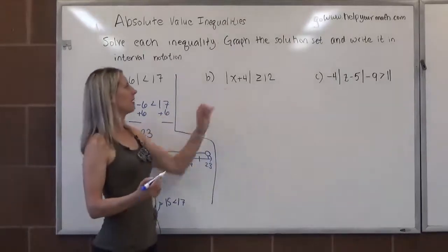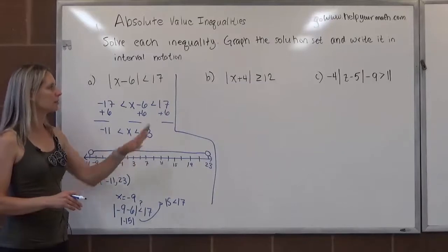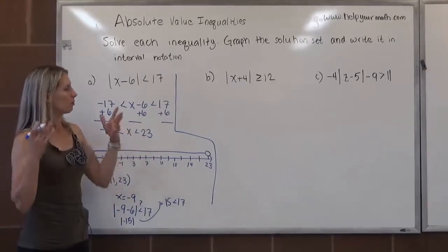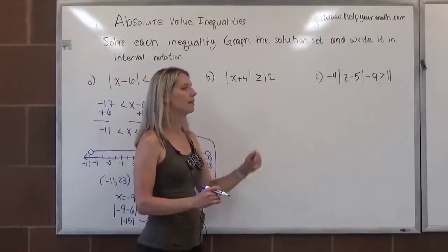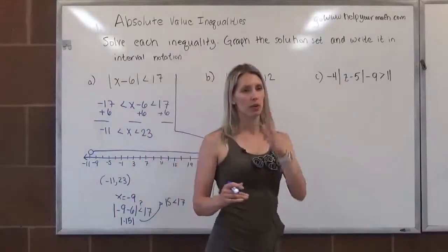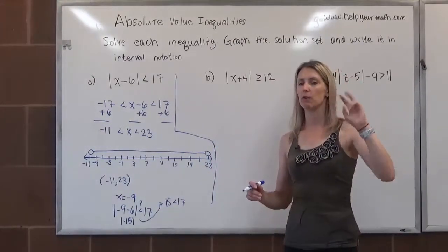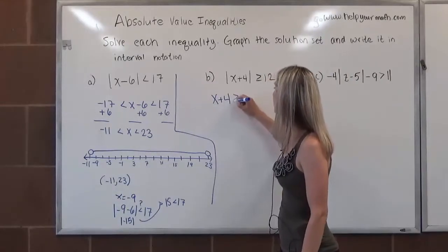In letter B, we have the absolute value of x plus 4 is greater than or equal to 12. In this case, the absolute value is already by itself, so that's great news. We can consider what we're talking about here. So we need the absolute value to be bigger than, further than, or equal to 12 on a number line. There are two intervals where this happens.